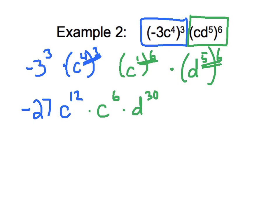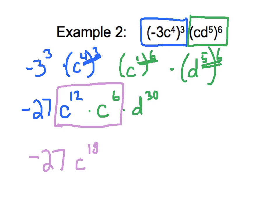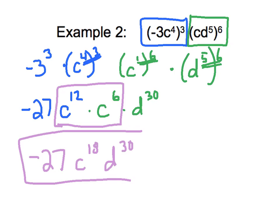Our next step is to apply the product of powers rule, which states that things with the same base number, when multiplied together, the base number stays the same and we add the exponents. So negative 27 stays negative 27. c to the 12th times c to the 6th — we add those exponents and get c to the 18th power, times d to the 30th. And that is it.